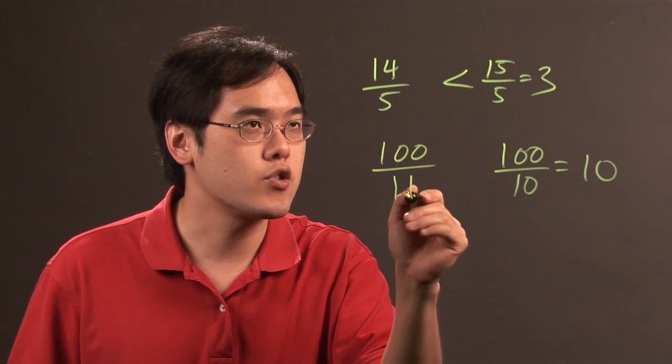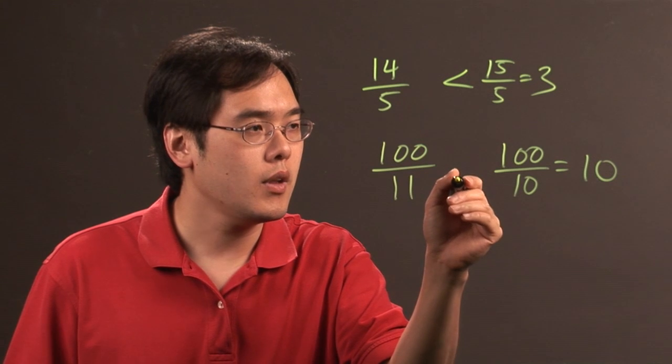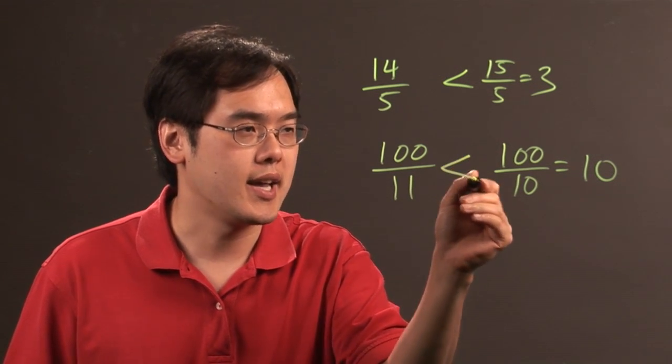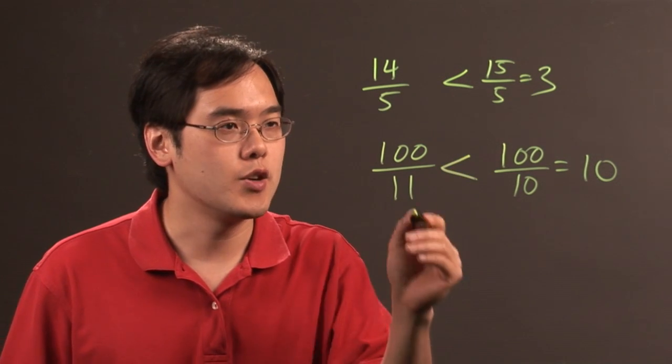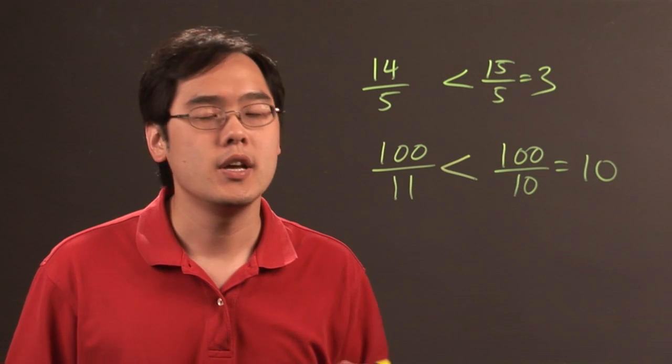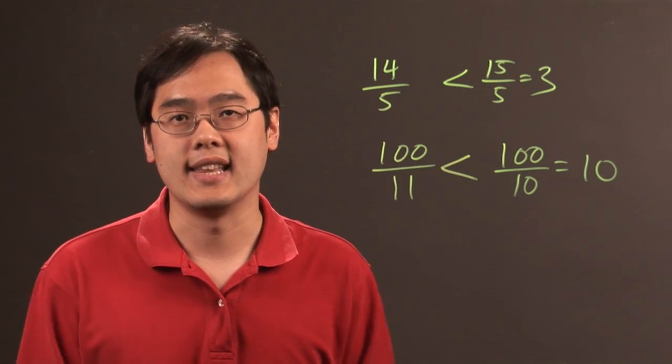So the understanding here is that 100 over 11 is going to be less than 100 over 10. Basically, 100 over 11 is going to be a number slightly less than 10.